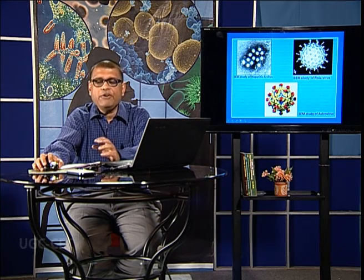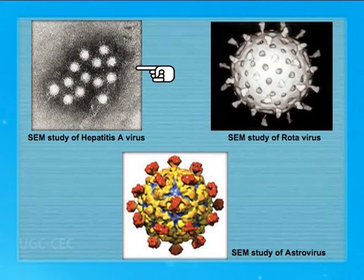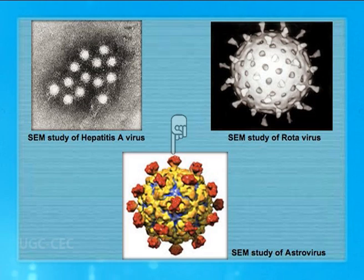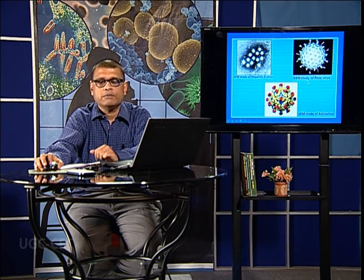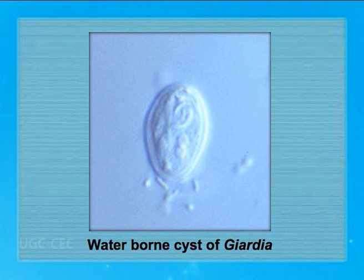Now we come to the different foodborne pathogens. Different pathogens can enter through our food, including enteric viruses like Hepatitis A virus causing jaundice, rotavirus causing severe dysentery or diarrhea, and astrovirus doing the same. These viruses enter through contaminated food and water as seen under the electron microscope. There may also be waterborne cysts of Giardia which, when they enter the body, become active trophozoites causing giardiasis — a stubborn type of infection particularly common in children.